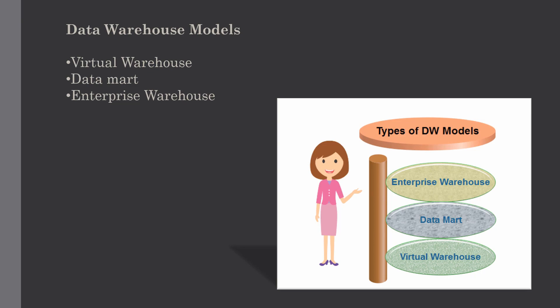The data mart contains a subset of organization-wide data that is valuable for specific groups within an organization. For example, in a manufacturing field there may be several groups such as quality control, manufacturing, and research and development departments. These different groups require different types of data marts containing relevant data focused on their specific needs. Data marts contain data for a specific particular group, and there are some important points to remember about them.